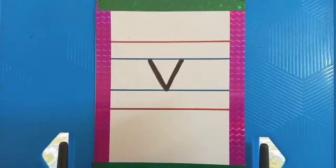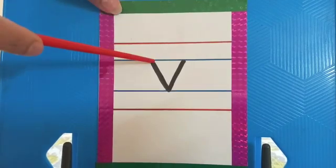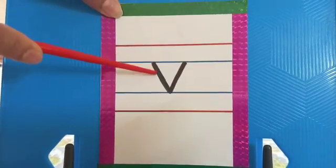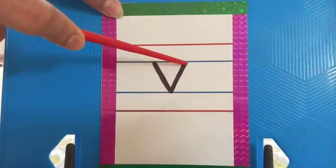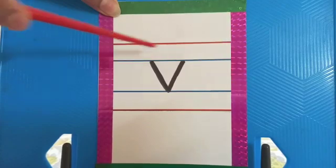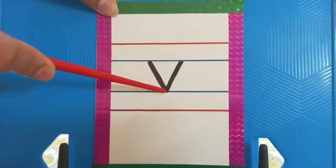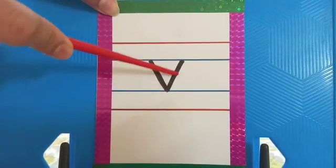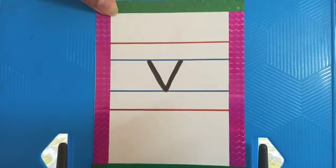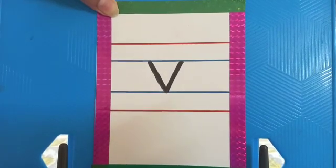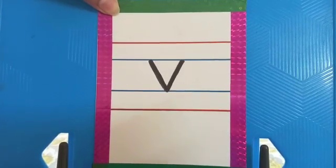So let's see how to write small V. Start from here, make a slanting line, again a slanting line. Start from here, slanting line, upward slanting line. This is small letter V. The sound is V.